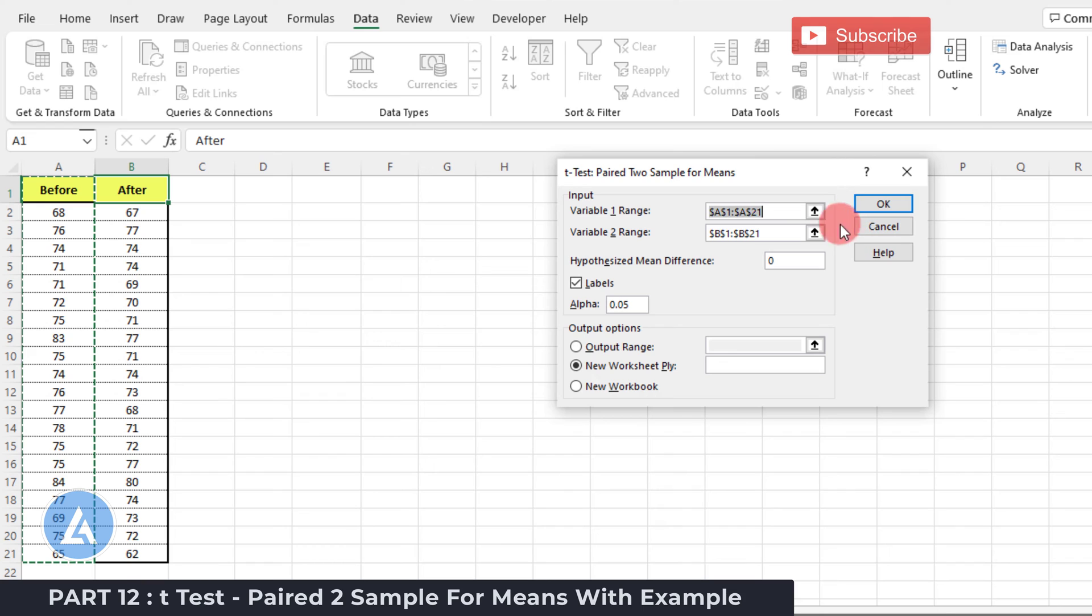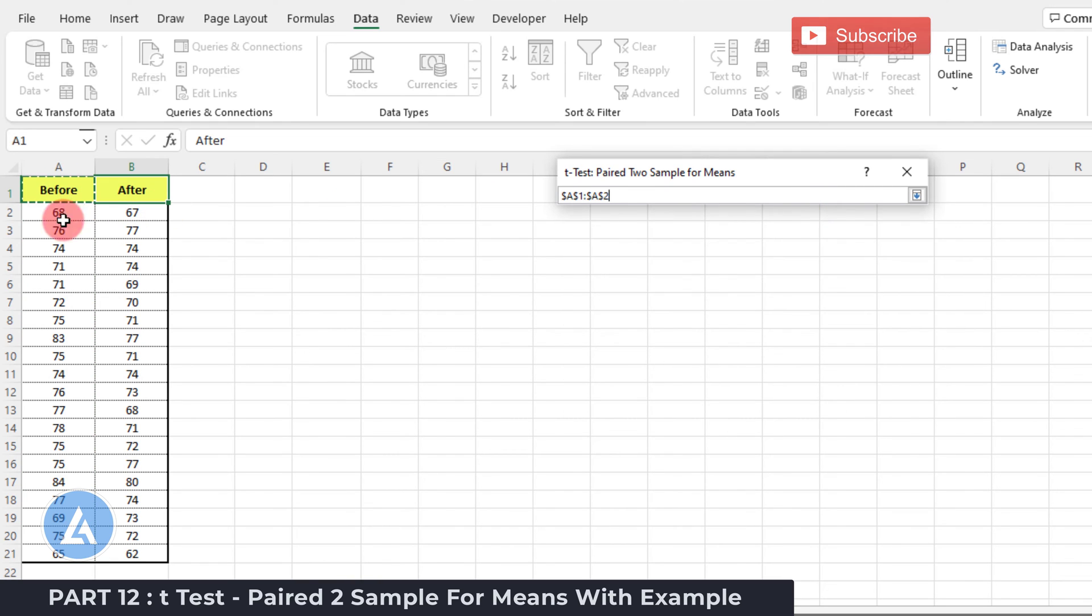Now the Paired t-Test data window will be open. Here in the first section we need to provide the input. Input talks about what is the variable 1 range and what is the variable 2 range. So select this first variable 1 range and select the before data. Make an enter.